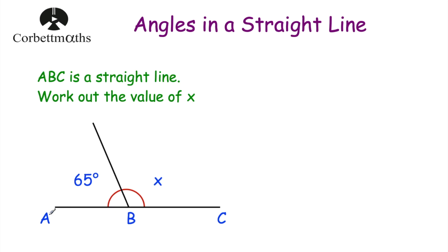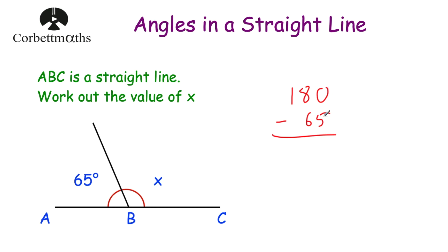Our next question says ABC is a straight line, so that means this angle and this angle will add together to be 180 degrees. We've been asked to work out the value of x. So if we take 65 degrees away from 180 degrees, that'll tell us what's left for x. So 180 subtract 65: 0 take away 5 we can't do, so cross off the 8 and call that 7, now that's 10. 10 take away 5 is 5, 7 take away 6 is 1, and 1 take away 0 is 1. So x is 115 degrees.